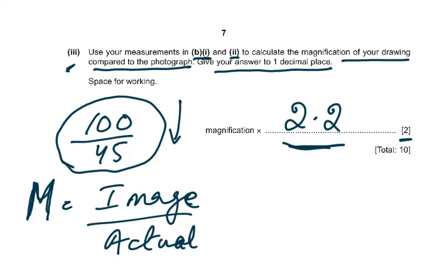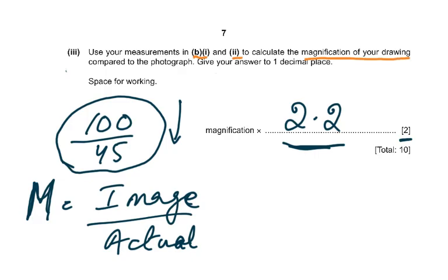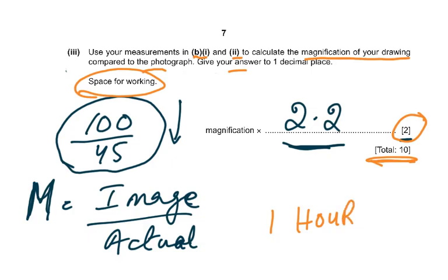You have to be very careful whenever you are reading the question — always read it very carefully. Use your measurements in B1 and B2 to calculate the magnification of your drawing compared to the photograph. Give your answer with space for working. You have to show your working, otherwise how am I going to give you those two marks? This was the second question, only for 10 marks total. Remember you had one hour to finish this paper, so you couldn't spend too much time on the first question. The drawing would have taken some time to get the proportions right. Thank you very much and all the very best.